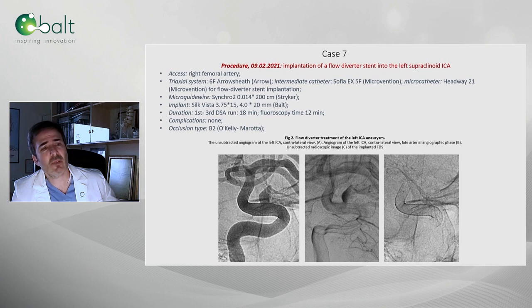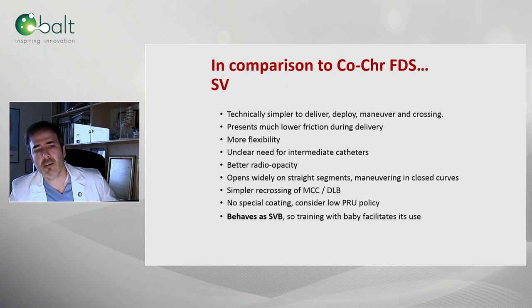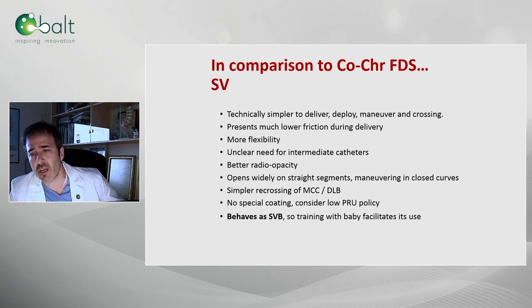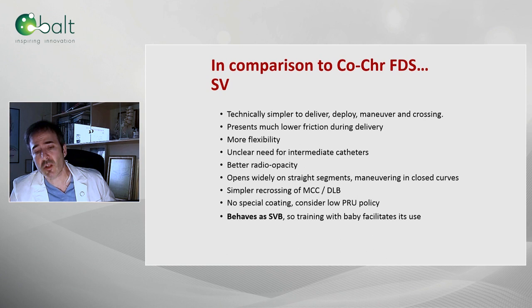This is the system that we use: 6 French as usual, SOFIA in this particular case and Headway 21. In comparison to other flow diverters such as the pipeline or cobalt chromium, I believe that this Silk Vista is technically simpler to deliver, to deploy, to maneuver, and to cross. Much lower friction during delivery, more flexibility. It's unclear if you really need the intermediate catheters. Radiopacity, no doubt, is much better. It opens widely on straight segments and you need to maneuver a little bit in closed curves like with every single flow diverter. It's simple to re-cross. No special coatings, so consider a low PRU policy. It looks to me that it behaves very much like the baby — so if you have already practiced with the baby, the adult version is going to be very similar.